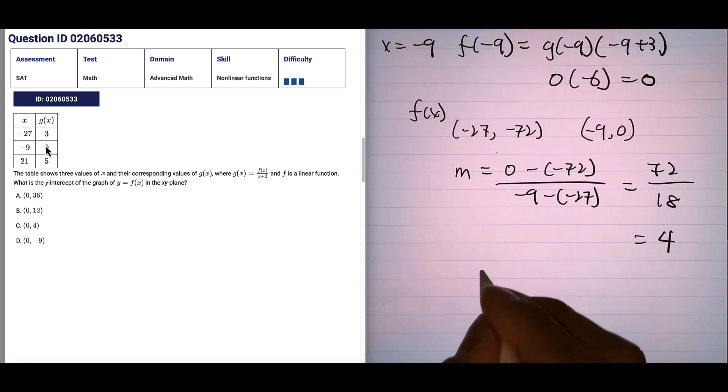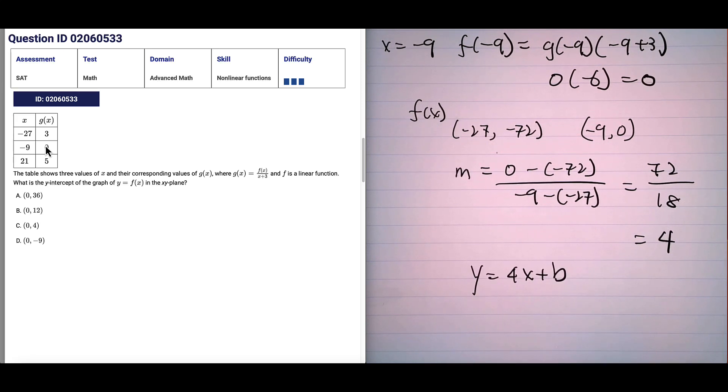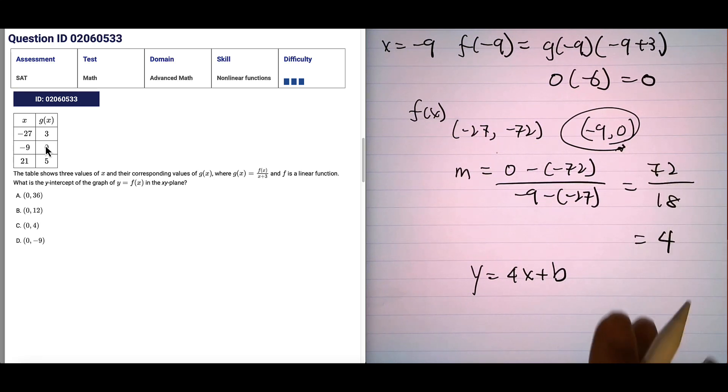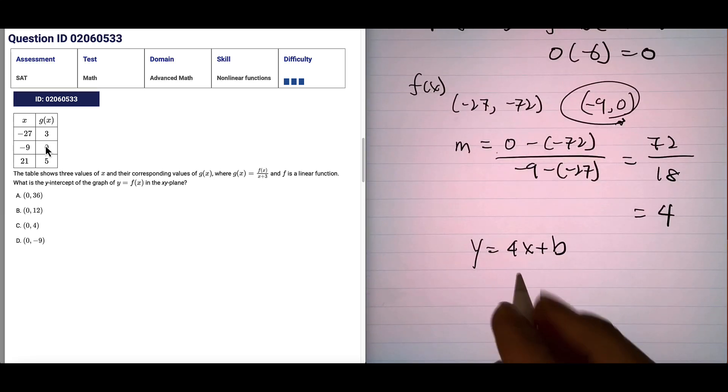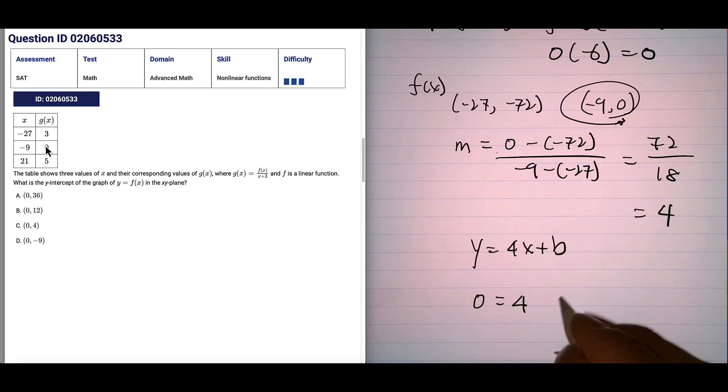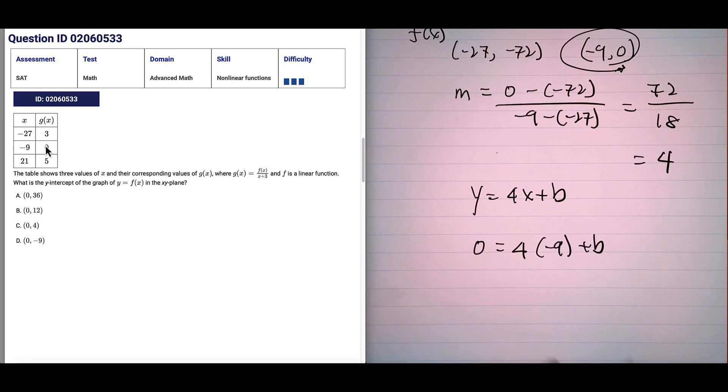And once you determine the slope, y equals 4x plus b. We can choose this coordinate. This is easier, besides we got 0 for y. So 0 equals, so we plug it in, y for 0, x for negative 9. And we look for value b here. So b is equal to 36.